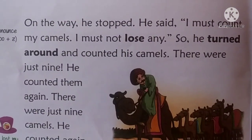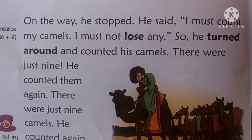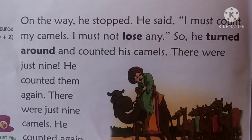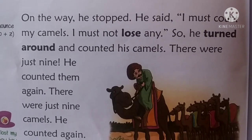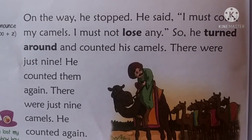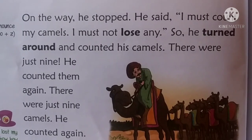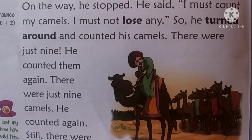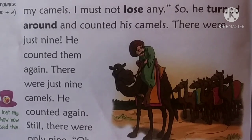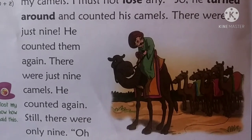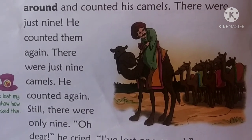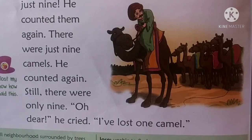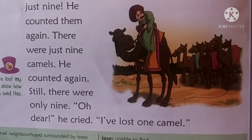Come to the second paragraph. On the way he stopped. He said, I must count my camels. I must not lose any. So he turned around and counted his camels. There were just 9. He counted them again — there were just 9 camels. He counted again. Still there were only 9. Oh dear, he cried. I have lost 1 camel.